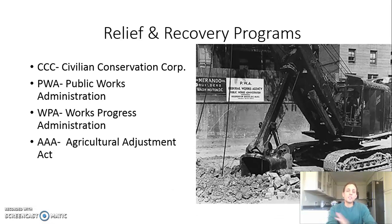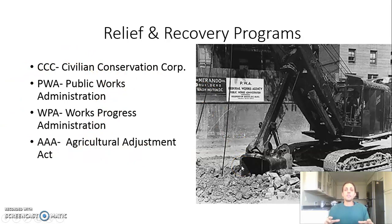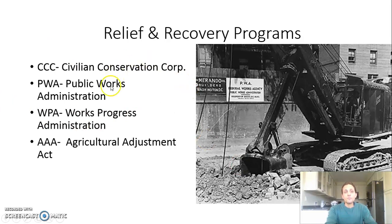We categorized his programs in class into the three R's: relief, recovery, and reform. The relief and recovery programs all have in common that they're trying to revive the economy, get money moving again, and provide jobs and direct aid to people. These are all public works projects — except the AAA, which is trying to help farmers — all trying to help the United States rebound and recover.